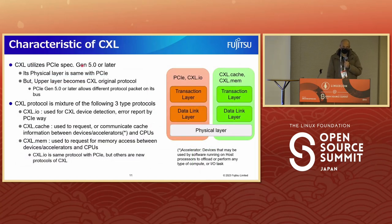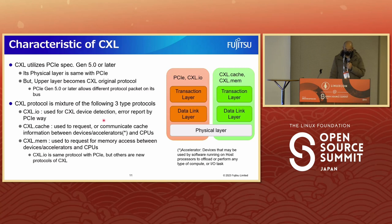Here are the characteristics of CXL. CXL utilizes PCI Express specification generation 5.0 or later. Its physical layer is the same as PCI Express, but the upper layers use CXL's original protocols. PCIe Gen 5.0 or later allows different protocols and packets on each bus. CXL protocol is a mixture of three types: CXL-IO for device detection and error reporting via PCI Express; CXL-Cache for requesting and communicating cache information between devices and CPUs; and CXL-MEM for memory access requests. CXL-IO uses the same protocol as PCI Express; the others are new CXL protocols.